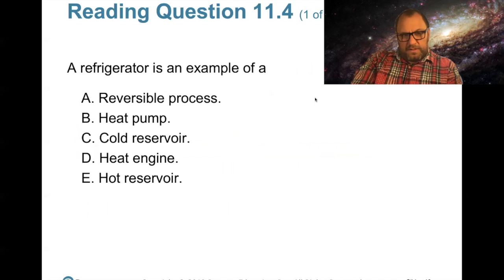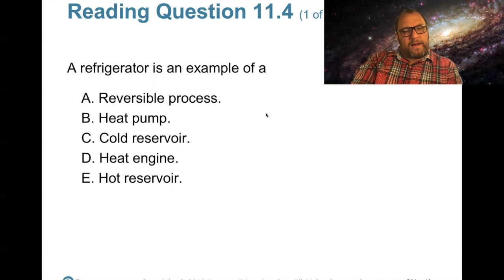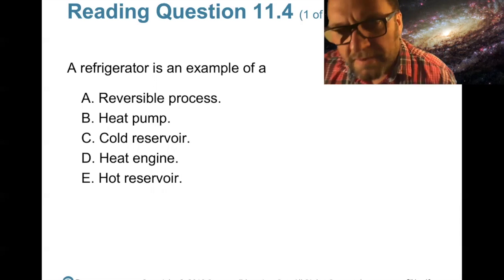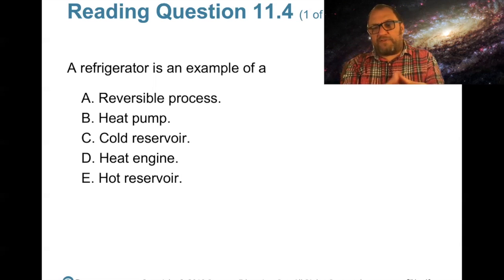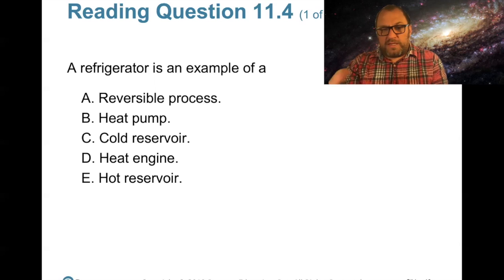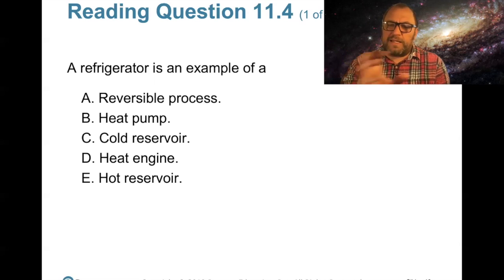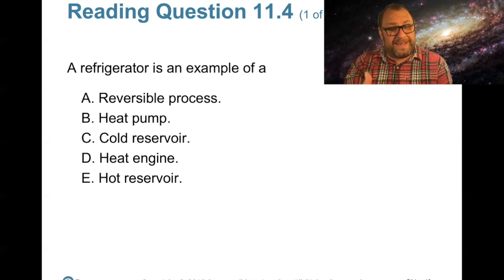Is a refrigerator an example of a reversible process? No — a heat pump, yes. If you stand behind a refrigerator, it's hot back there because it's taking thermal energy from inside and pumping it into the room. An air conditioner works the same way — it removes thermal energy from your house and puts it outside. That's why running an air conditioner with the door open is a bad idea; the heat can just come right back in.